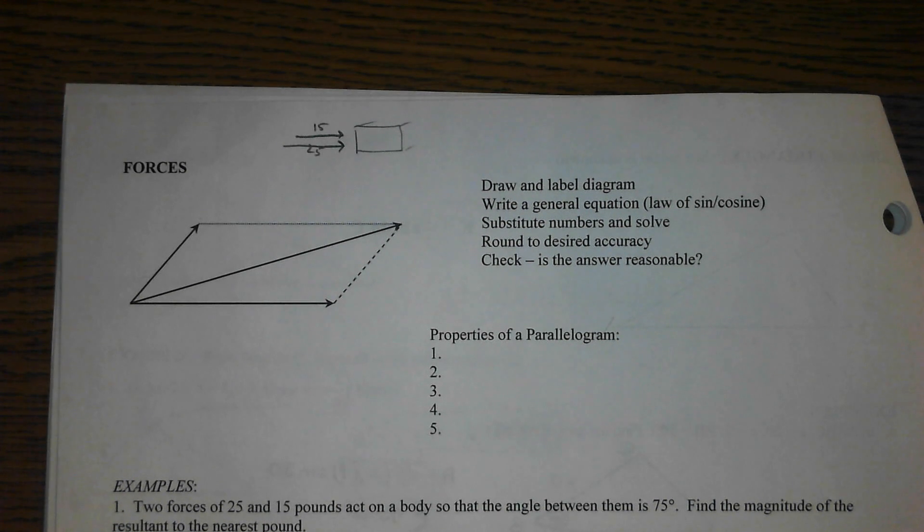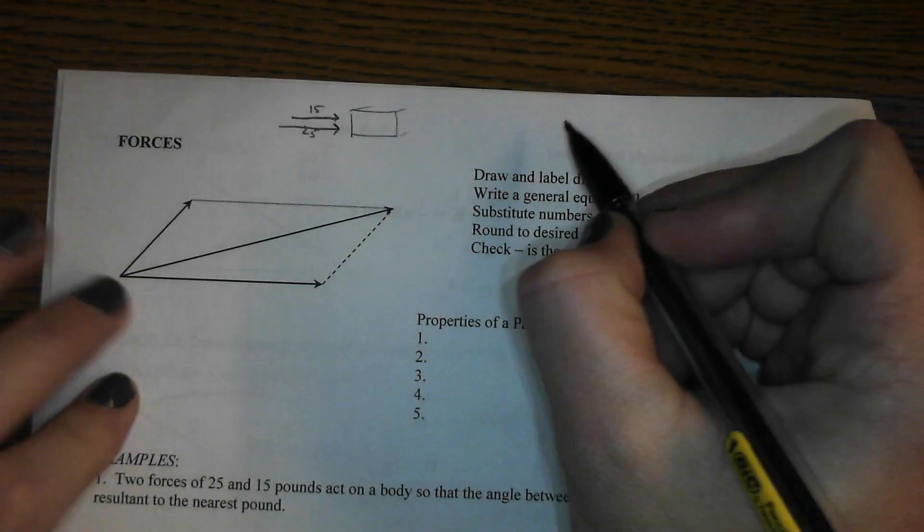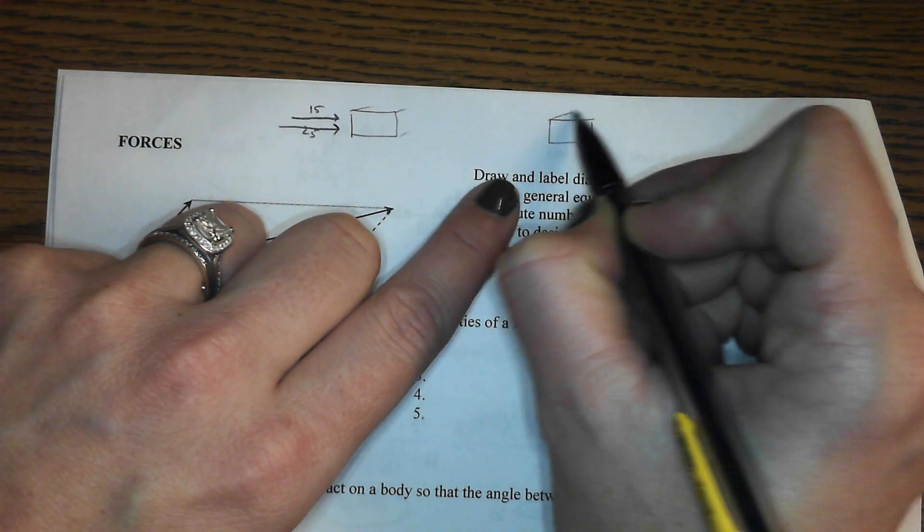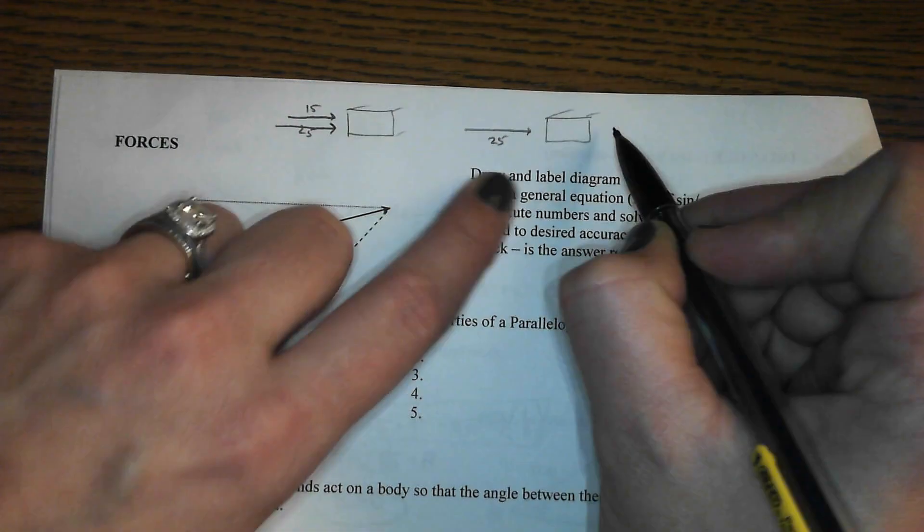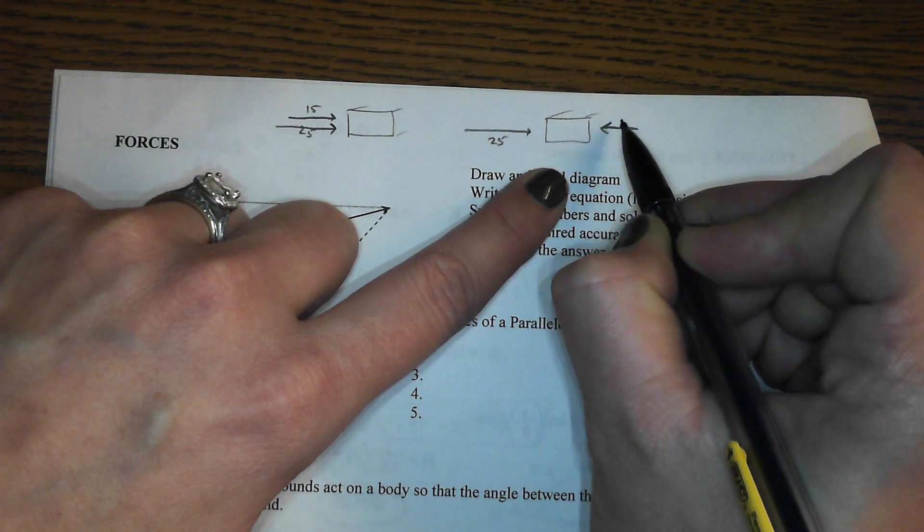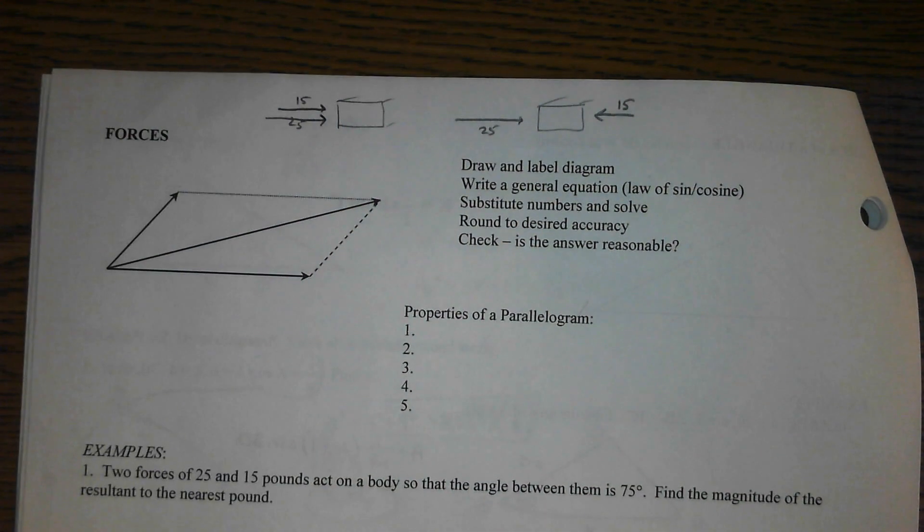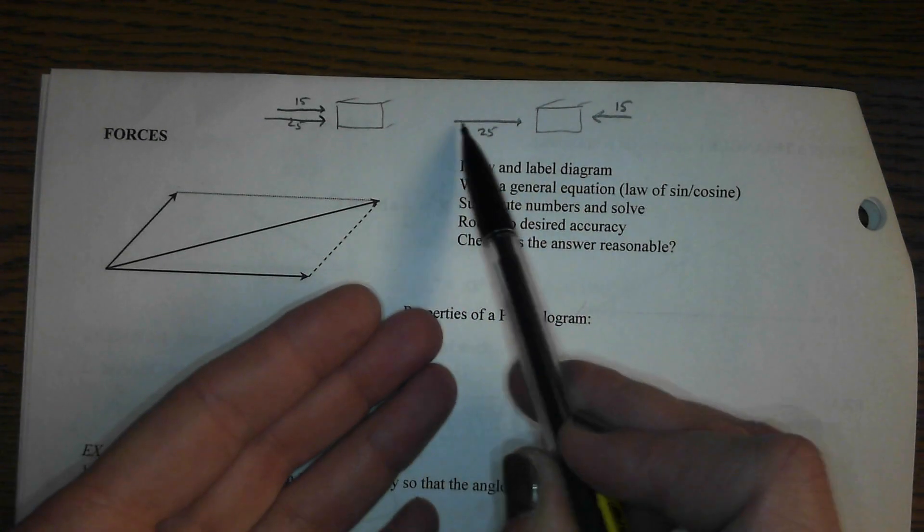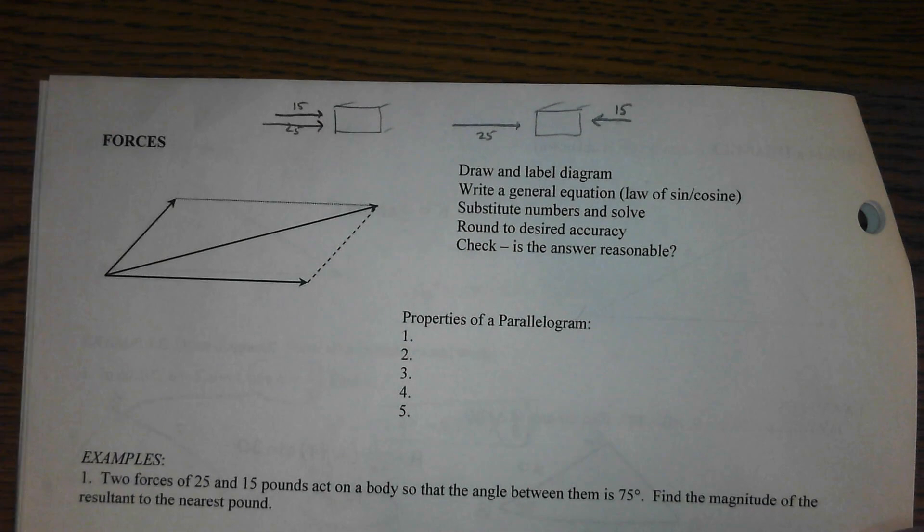So that would be an angle of zero degrees between the two of them, would just be 40 pounds of force because they're working perfectly together. So that's an easy thing to wrap your head around. If we've got a similar situation and one person is pushing with 25 pounds of force that way and the other one is going in the opposite direction with 15 pounds of force, the 15 in one direction and the 15 in the other will cancel, leaving just 10 pounds pushing it in that direction.